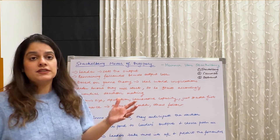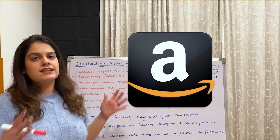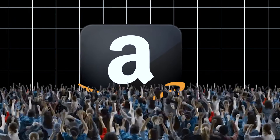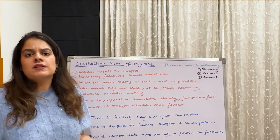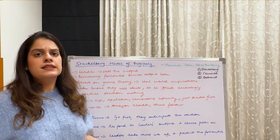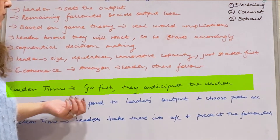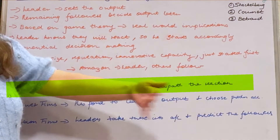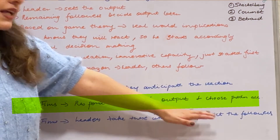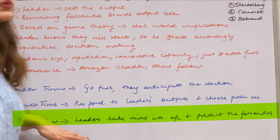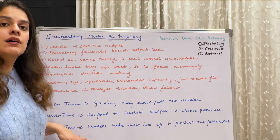A great example is Amazon. In e-commerce, Amazon started as a leader, and others are going to follow. But Amazon is not stupid — Amazon has already planned everything, knowing that once it starts, people are going to copy it. Many other e-commerce websites will come, but Amazon as the leader foresees the reaction beforehand. Basically, we have three types of firms: leader firms, which go first and anticipate the reaction of followers; follow-up firms, which respond to the leader's output and choose their production accordingly; and reaction firms, whose reactions the leader plans around.